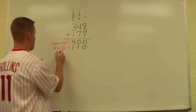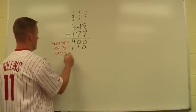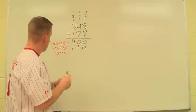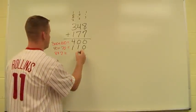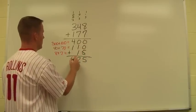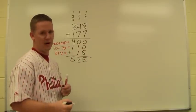And then finally we have our ones column, 8 plus 7. Now all this work out here is designed so that it's able to be done in the head, which is very helpful. So 8 plus 7 is 15. Now all we have to do is add everything back up. 525 would be our answer.